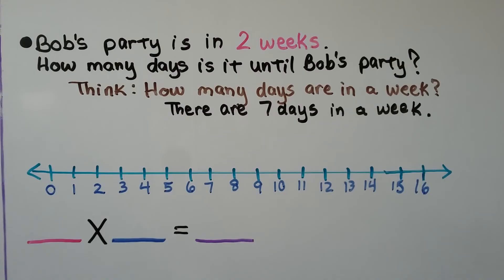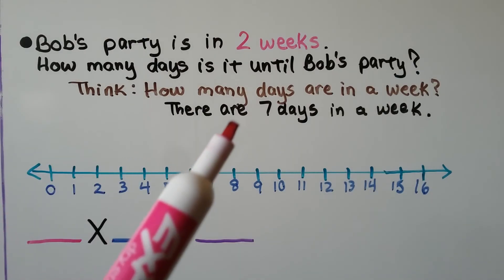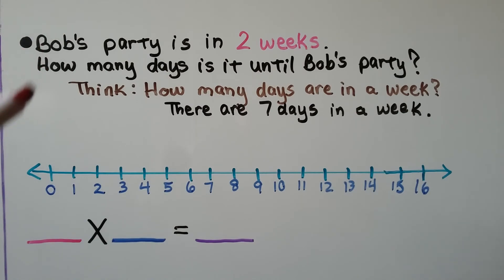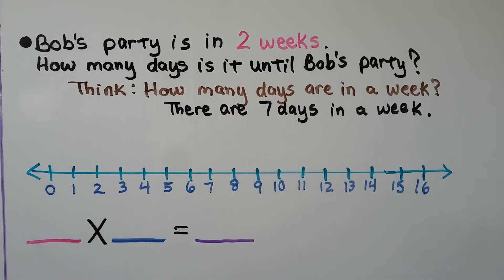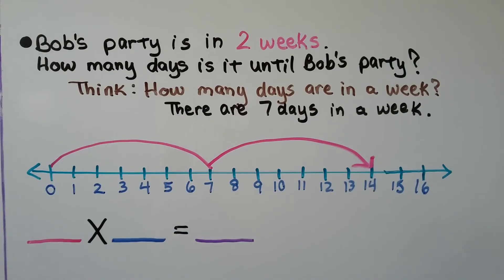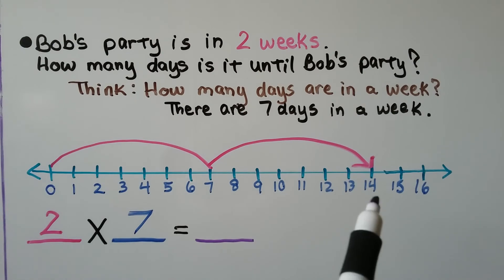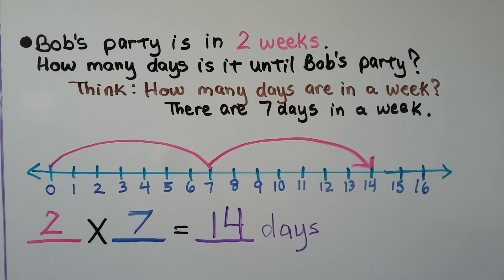Bob's party is in two weeks. How many days is it until Bob's party? There are seven days in a week and his party is in two weeks, so we're going to make two groups of seven — two jumps of seven, one jump and two jumps. We have two equal groups with seven in each group. It landed on 14, so our product is 14. The answer is 14 days until Bob's party. We have to label the word 'days' in a word problem. Our number line shows two times seven is equal to 14.